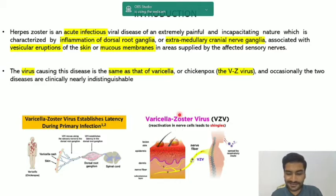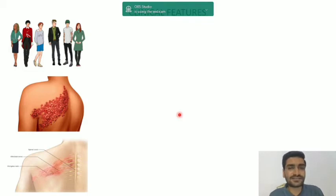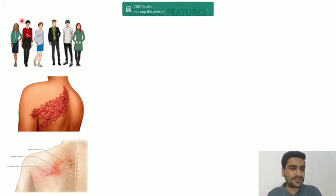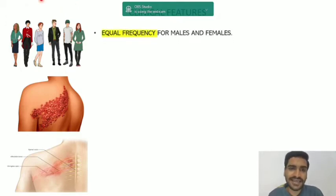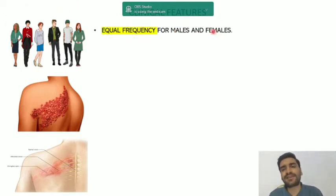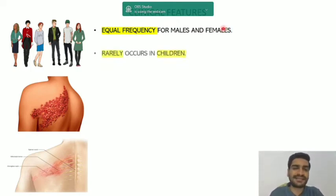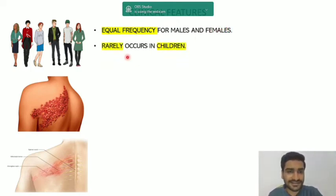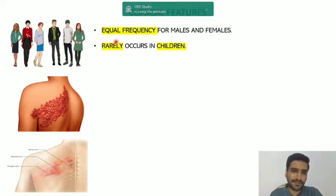The clinical features of herpes zoster mainly affect adults, because the primary infection of varicella zoster causes chickenpox in children, and reactivation mainly affects adults. There is equal frequency in males and females - no gender predilection. Rarely, this disease can also be seen in children, but the main striking point is that it primarily affects adults with equal frequency in males and females.